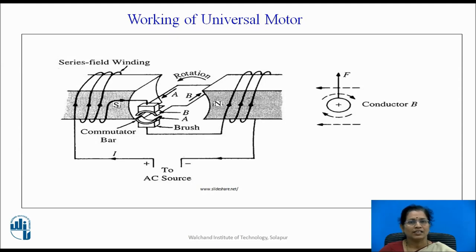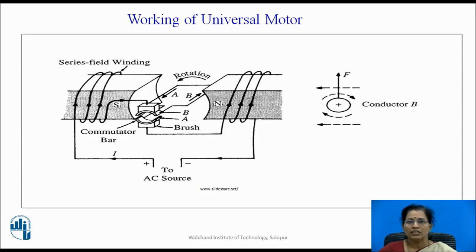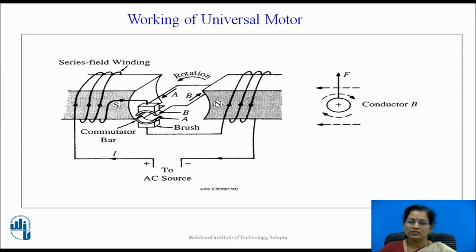Fleming's left hand rule states that if we place three fingers — middle finger, forefinger, and thumb — perpendicular to each other of the left hand, then the forefinger indicates the direction of the magnetic field, the middle finger indicates the direction of the current, and the thumb indicates the direction of the force created on the current carrying conductor. In the second diagram, conductor B is placed in the magnetic field; the direction of the force on the current carrying conductor is upward, and the magnetic flux due to the main winding has direction toward the left side.